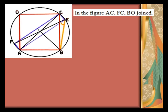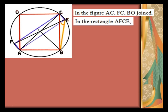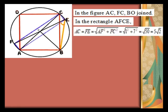In the figure, AC, FC, and BO are joined. In the rectangle AFCE, AC equals FE equals square root of AF squared plus FC squared, that is 1 squared plus 7 squared, which equals 5 times root 2.